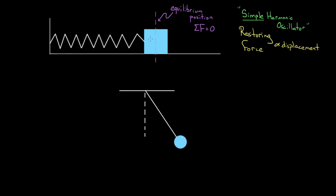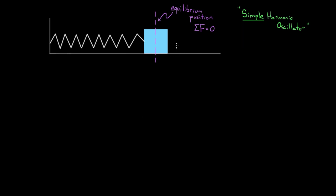In this video, we're just going to look at the mass on the spring to keep it simple; we can look at the pendulum later. Now you might wonder how we know this mass on a spring is really a simple harmonic oscillator. We can prove it, because the force providing the restoring force is the spring. We know the formula for the spring force — that's given by Hooke's Law, which says the spring force equals negative k times x, the spring displacement.